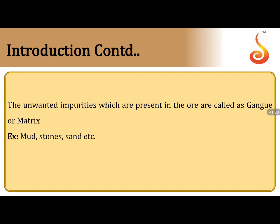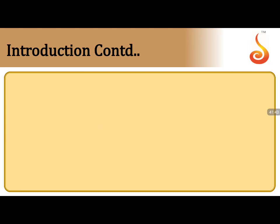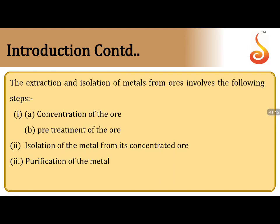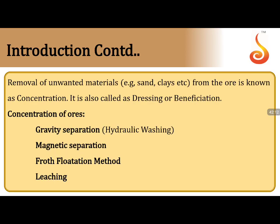The extraction procedure follows three steps: (1) Concentration of the ore (pre-treatment) — removal of impurities; (2) Isolation of the metal from its concentrated ore — extraction of crude metal; (3) Purification (refining) of the crude metal. Concentration of ore, also called dressing or beneficiation, involves removal of earthly and siliceous impurities.